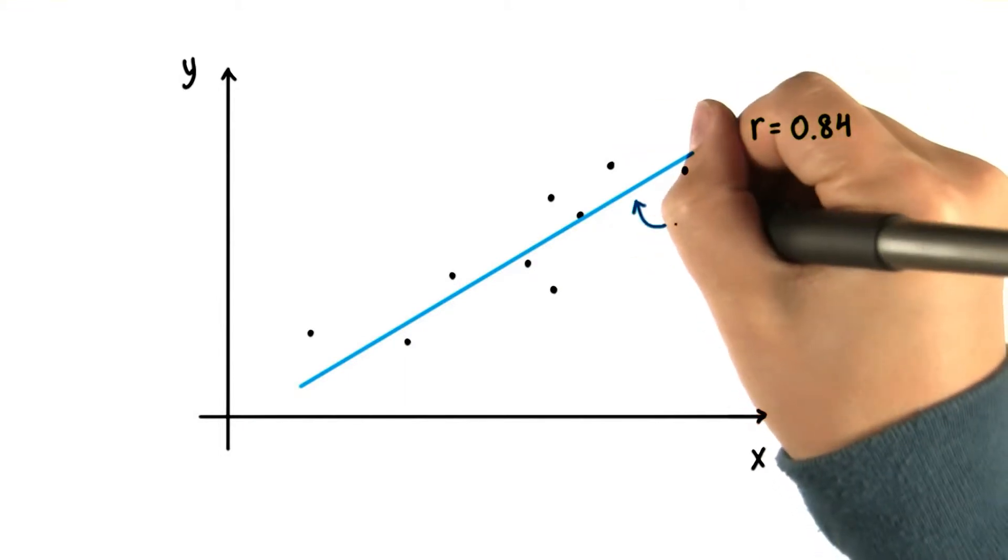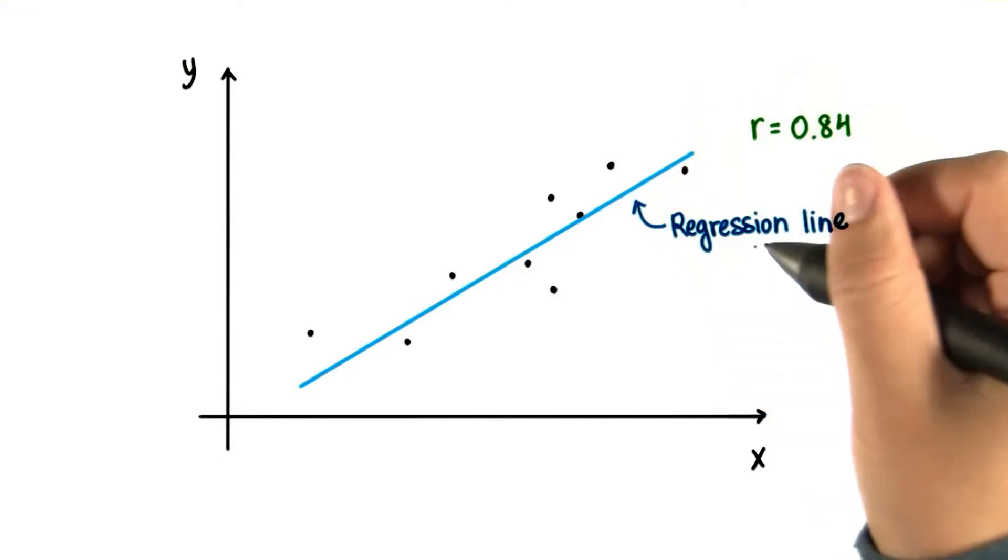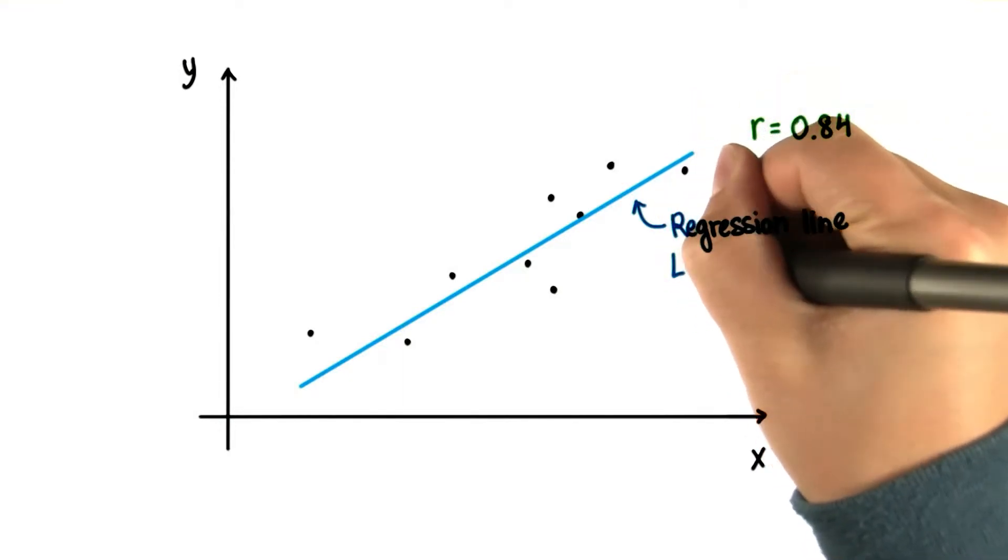This straight line has several names. One is the regression line. Another more intuitive name is the line of best fit.